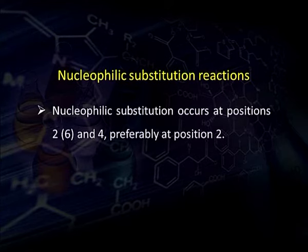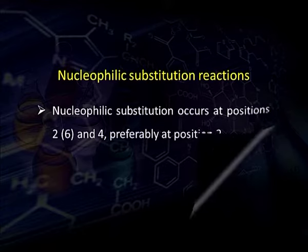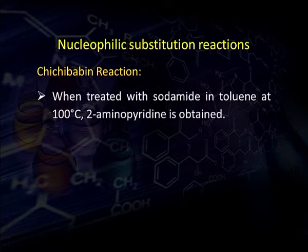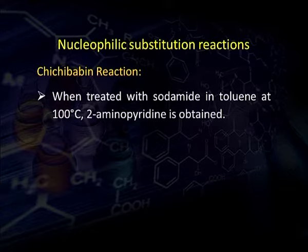Besides electrophilic substitution reactions, pyridine also gives nucleophilic substitution reactions. Some important ones are the Chichibabin reaction, reaction with alkali, and reaction with alkyl-lithium. In nucleophilic substitution reactions, nucleophiles attack at positive positions, and in pyridine positions 2, 4, and 6 are positive compared to 3 and 5, making these positions suitable for nucleophilic attack.